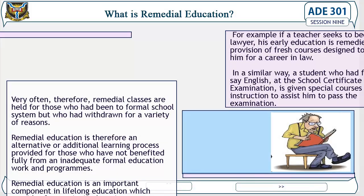Very often, remedial classes are held for those who had been in a former school system but who had withdrawn for a variety of reasons. Remedial education is therefore an alternative or additional learning process provided for those who have not benefited fully from an inadequate formal education. It is an important component in lifelong education, which provides for continuing learning. For example, if a teacher seeks to become a lawyer, his early education is remedied by the provision of fresh courses designed to prepare him for a career in law. Similarly, a student who had failed English at the School Certificate examination is given special courses of instruction to assist him to pass the examination.